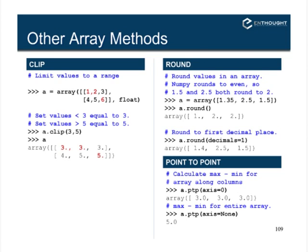There's also a rounding method. a.round will round to even values — so 1.5 and 2.5 are both rounded to 2. You can also specify a decimal precision: if you specify rounding to one decimal place, instead of rounding to an integer you keep one digit after the decimal. There's also a peak-to-peak function, which finds the minimum and maximum values in your array and subtracts them to find the dynamic range of the array.